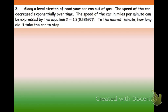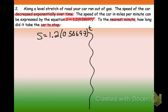So it says, along a level stretch of road, your car runs out of gas. The speed of the car decreases exponentially over time. So we're going to be using some formula. The speed of the car in miles per minute can be expressed using the equation... Oh, look at that. They gave us a formula right here. Isn't that beautiful? So they gave us S equals 1.2 times 0.58697 to the t power. And they say to the nearest minute, how long did it take the car to stop? Now, I'm going to split this into two things here, because I'm going to do something that I don't want you to write down. And I want to show you how to have a good strategy when you're going through these problems.